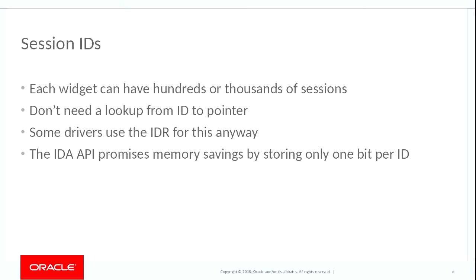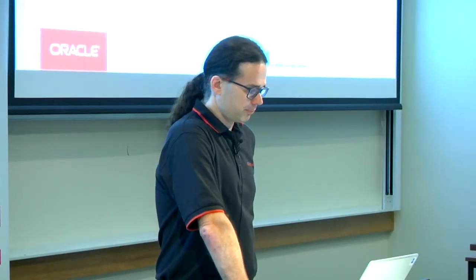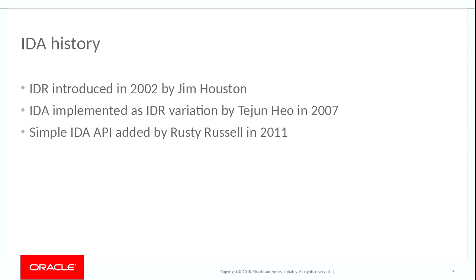But it turns out the IDR isn't the only thing we need IDs for. We don't just need a per-card ID — each card can have a session, and you can have hundreds or thousands of sessions on a card. But we don't need to look up pointers by ID, so the IDR is a little inefficient because we're storing an entire pointer — 32 or 64 bits — for each allocated ID. Maybe we can do a little bit better from a memory consumption point of view. That's what the IDA data structure promises: it saves you memory by using only one bit to represent an allocated ID.